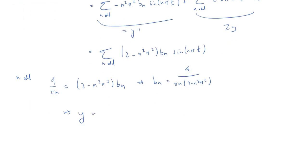So, we put this together now. Our y is going to equal a sum over odd n. Our b sub n is going to be 4 over πn times 2 minus n squared π squared. And then we have sine of nπt. And there we go. There is our Fourier series solution for the differential equation.